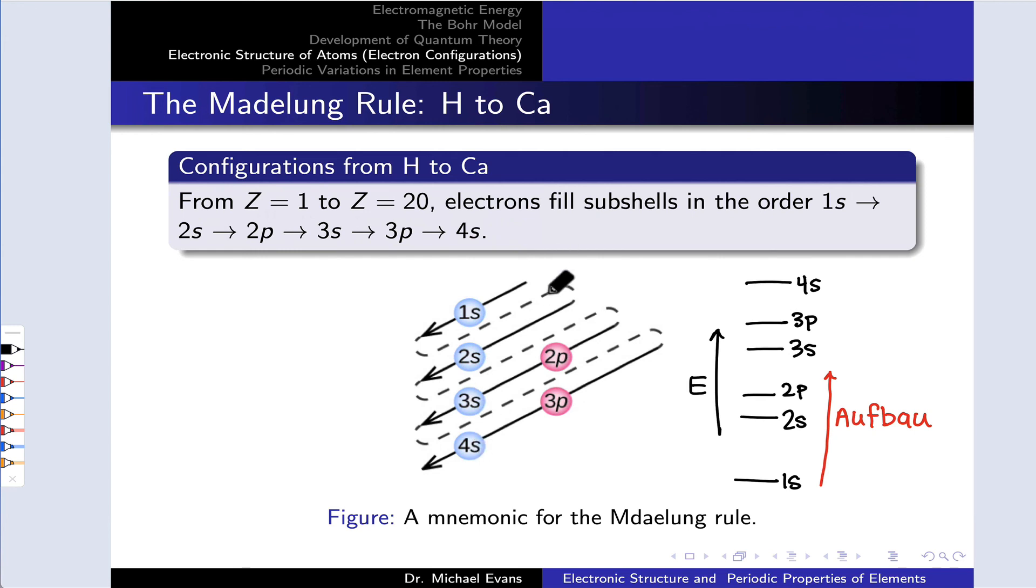And this is a mnemonic you may have seen before. If we list the subshells in columns, 1S, 2S, 3S, 4S, 2P, 3P, and draw diagonal lines like this, we get the listing of orbitals from lowest to highest energy, 1S, 2S, 2P, 3S, 3P, 4S, etc.